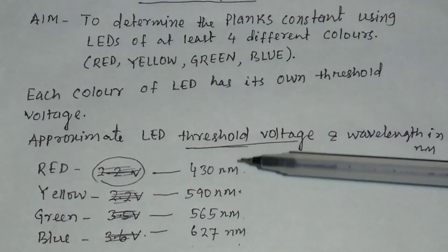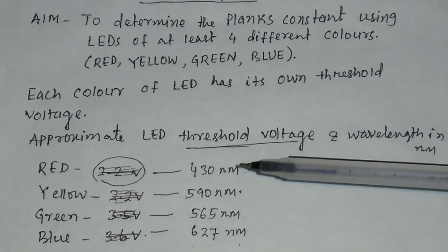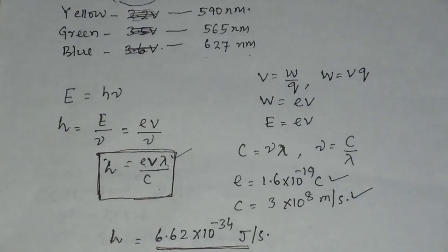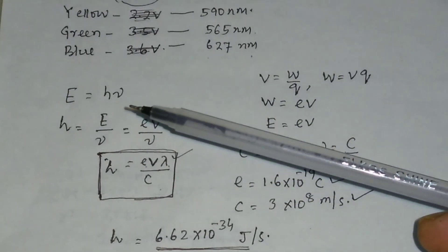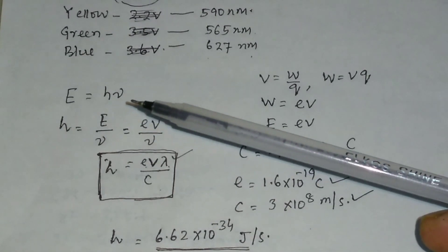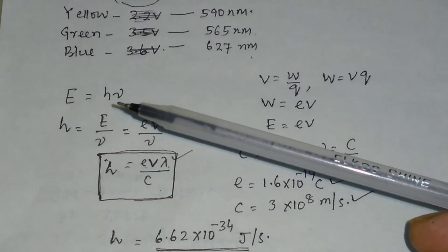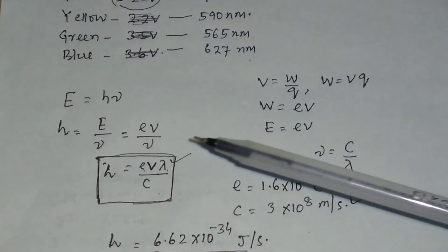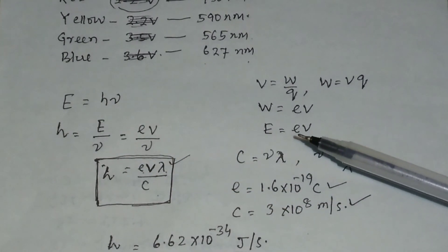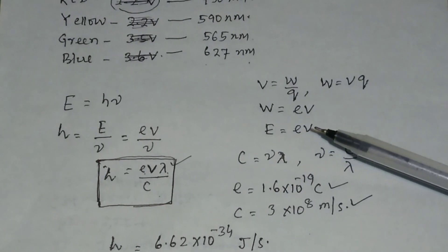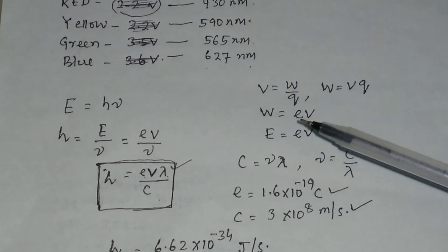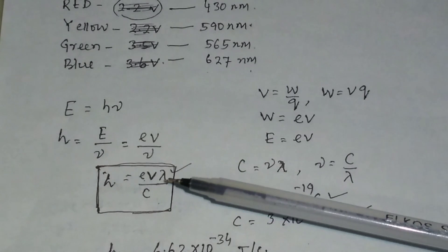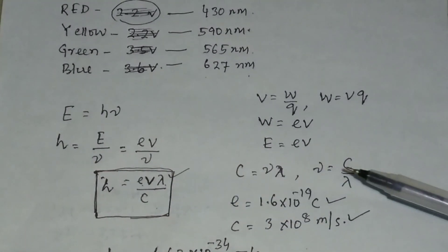We know each color of LED has its own threshold voltage, so we will find out the approximate threshold voltage. When an LED glows, it emits energy. The energy is given by the formula E = hν, where h is Planck's constant and ν is the frequency. Therefore, h = E divided by ν.